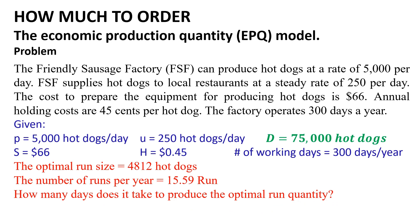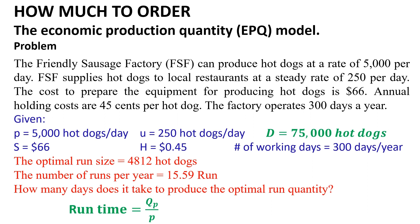The last question is to find the number of days required to produce the optimal run quantity, or the run time. This is calculated by dividing the optimal run quantity QP by the production rate P. So, the run time equals 4,812 divided by 5,000, which equals 0.96 days.